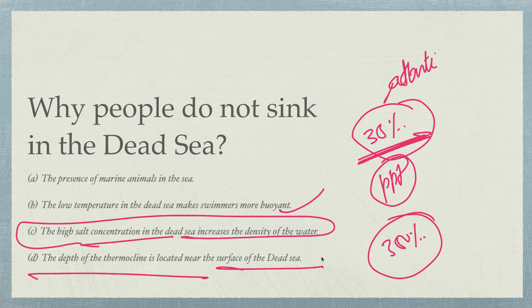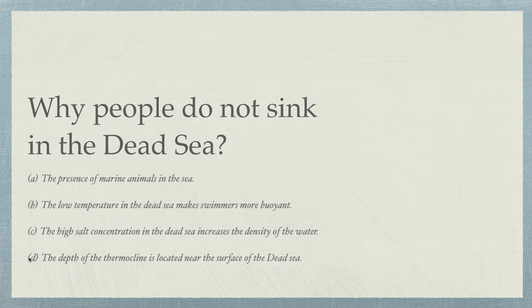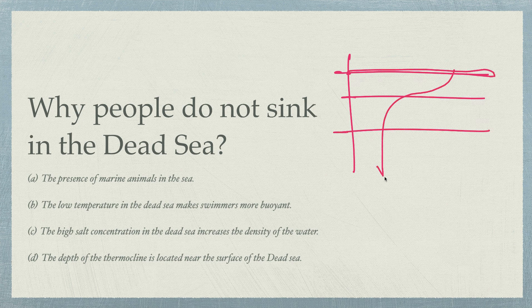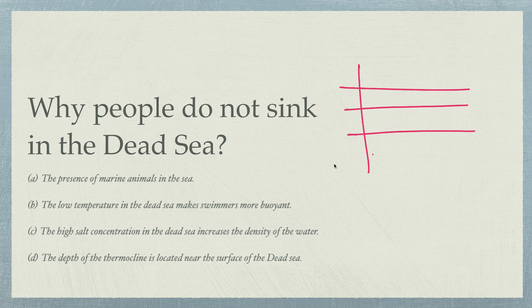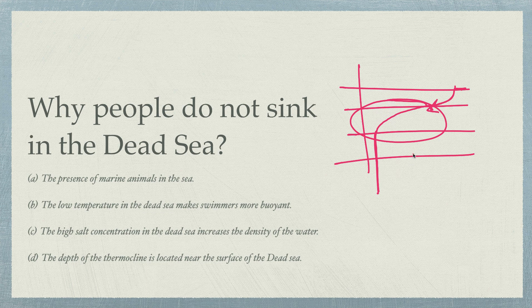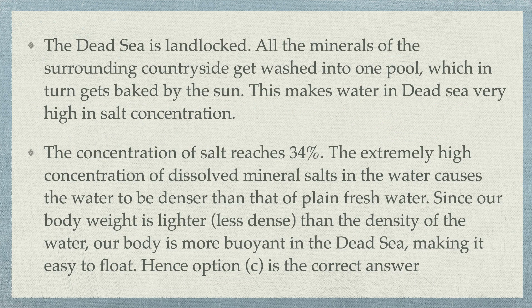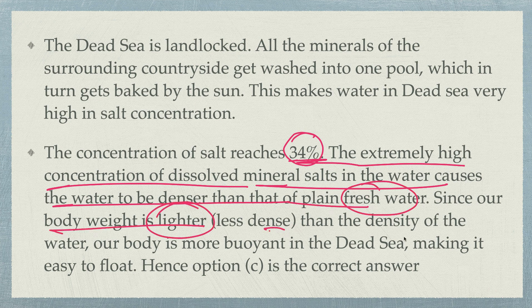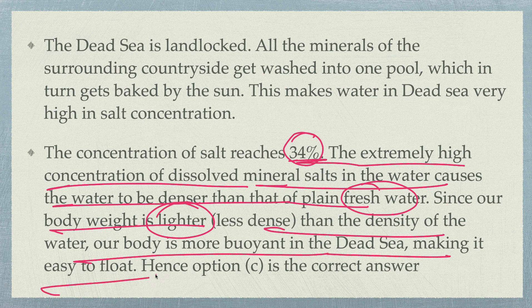The thermocline is a layer in the ocean where temperature decreases rapidly. Below the photo zone at the surface, temperature drops sharply — that layer is the thermocline. Inside the thermocline, salinity decreases. The salinity of the Dead Sea is 30 to 44 percent. The extreme high concentration of dissolved mineral salts makes the water denser than plain fresh water. Since our body weight is less dense than the Dead Sea water, our body is more buoyant, making it easy to float. Hence option C is the correct answer.